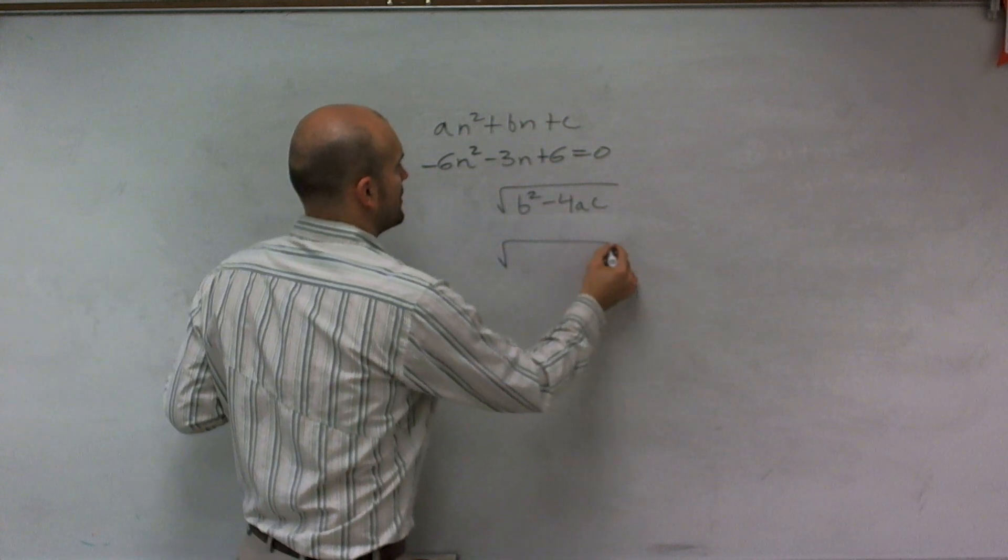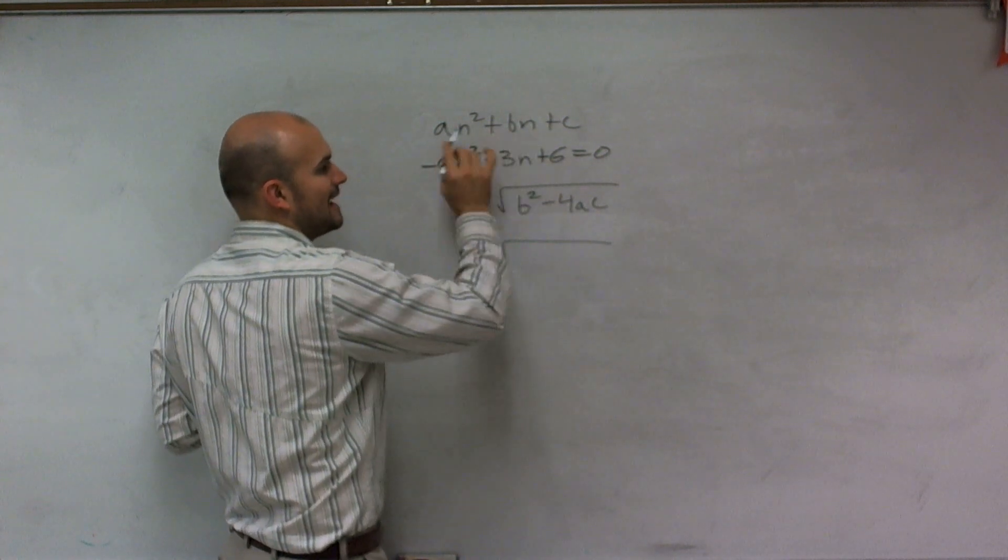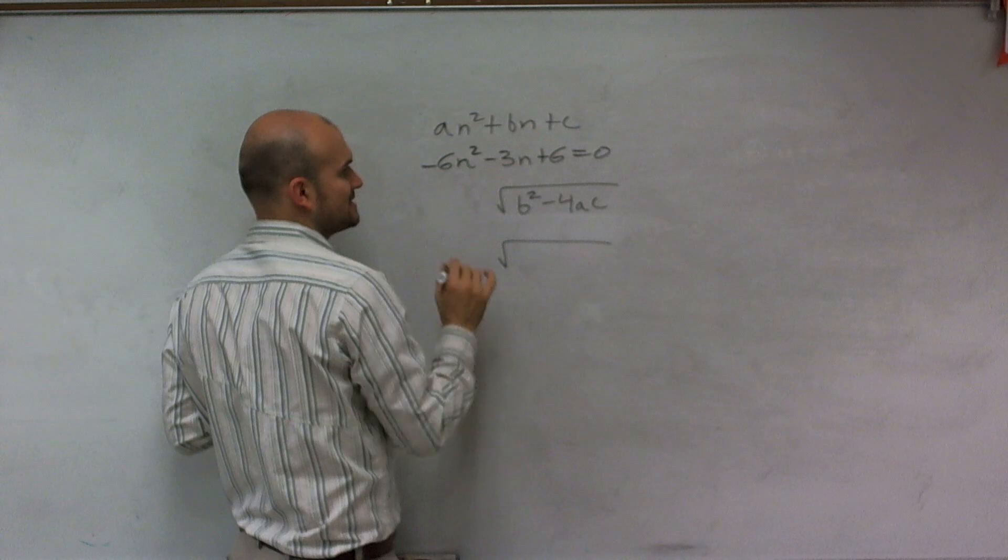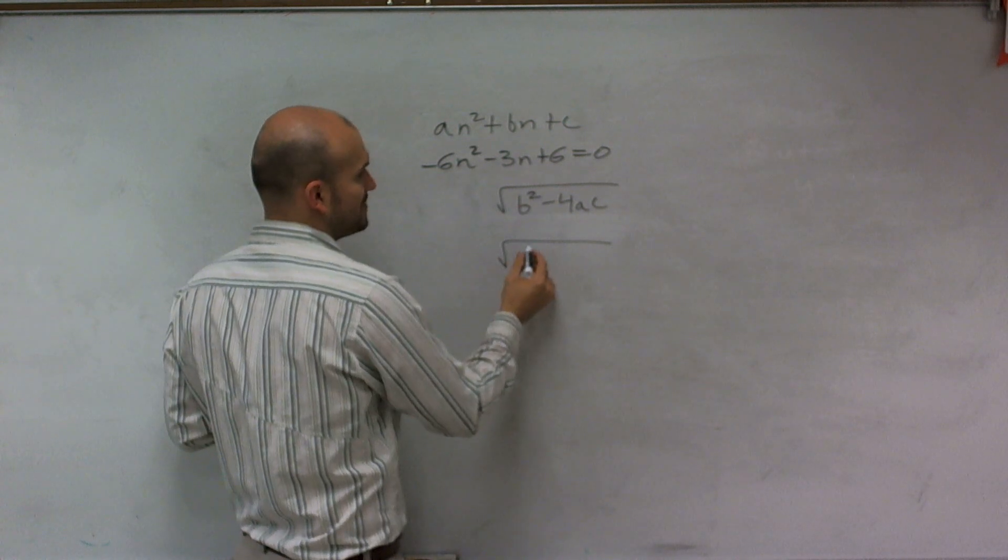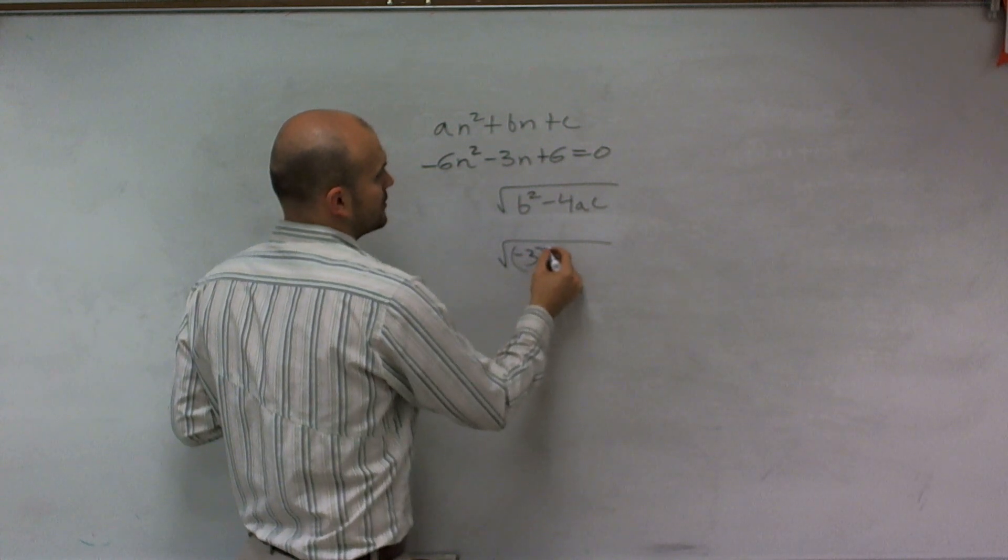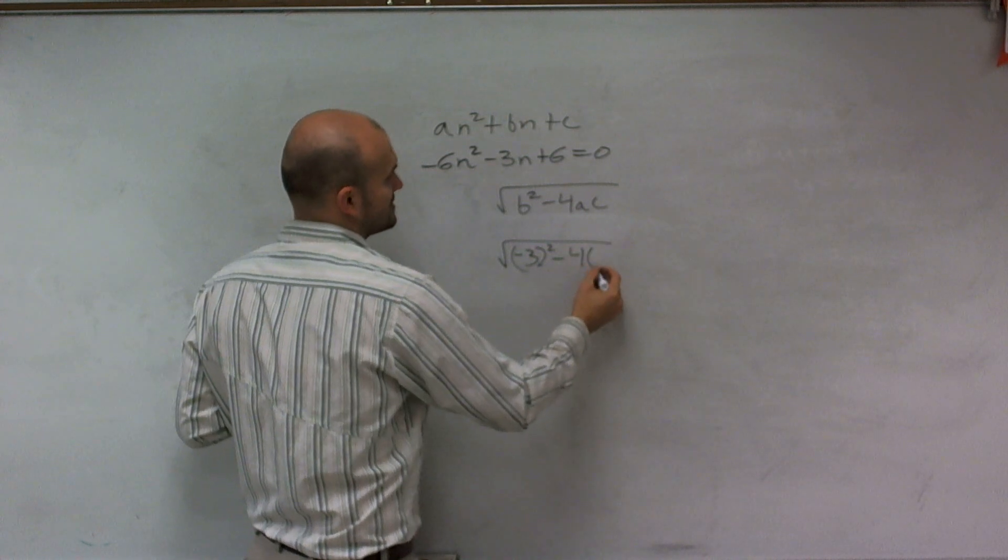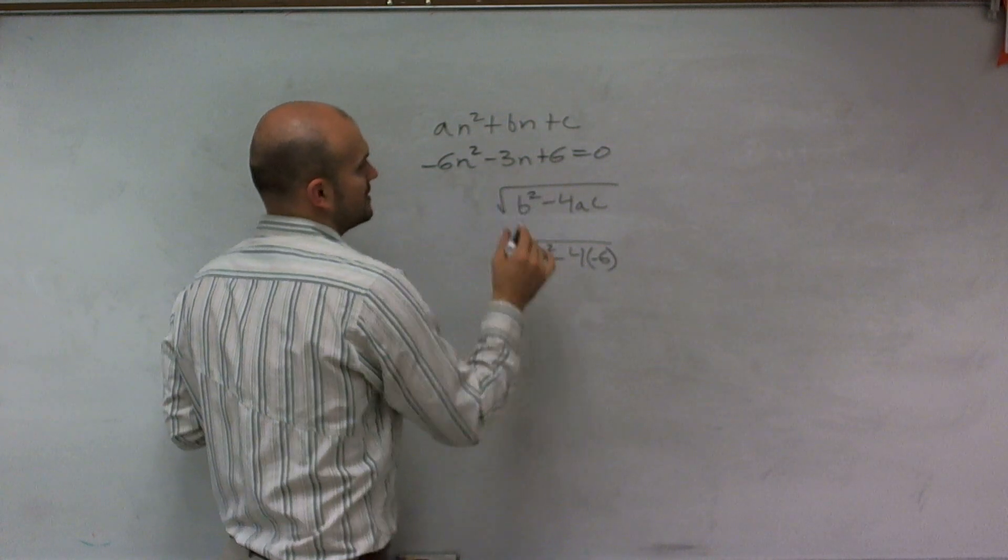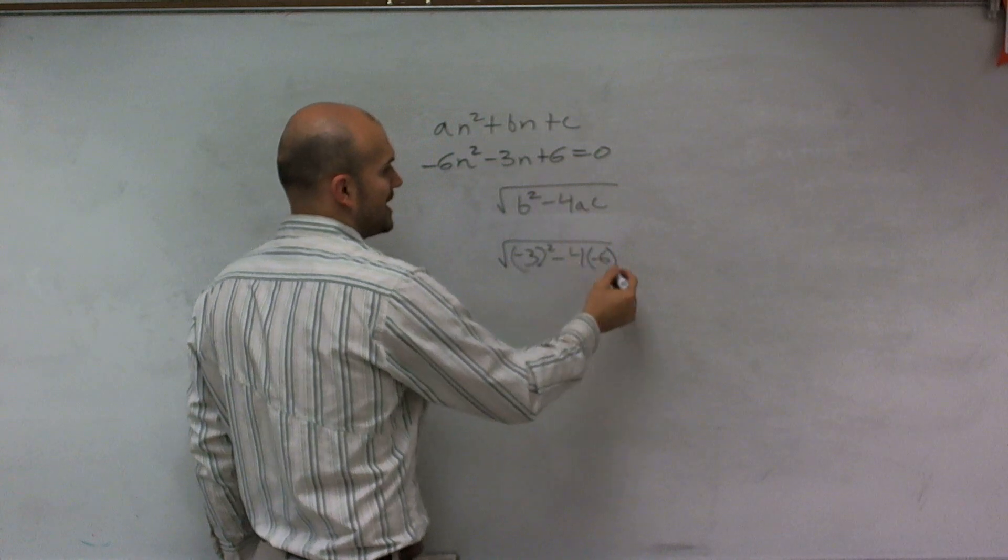So for this problem, my coefficients a and b are going to be my variables, and then c will be my constant. So here, my b is going to be (-3)² minus 4 times (-6) times c, which is positive 6.